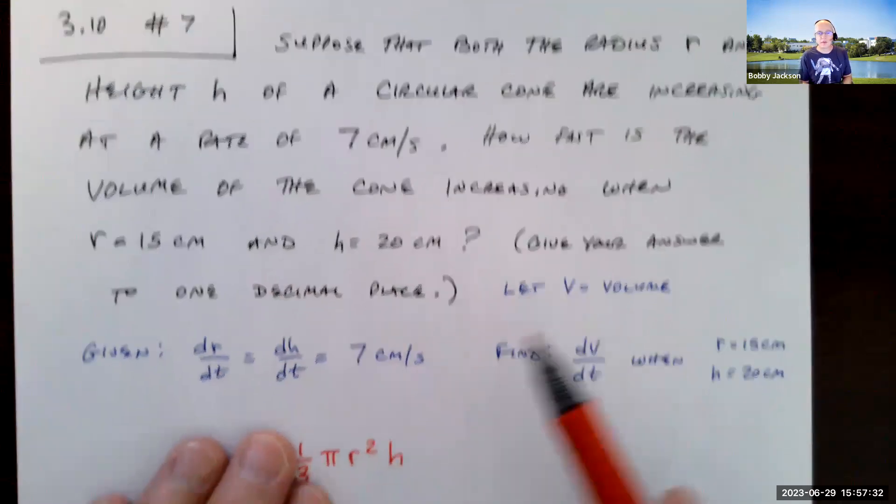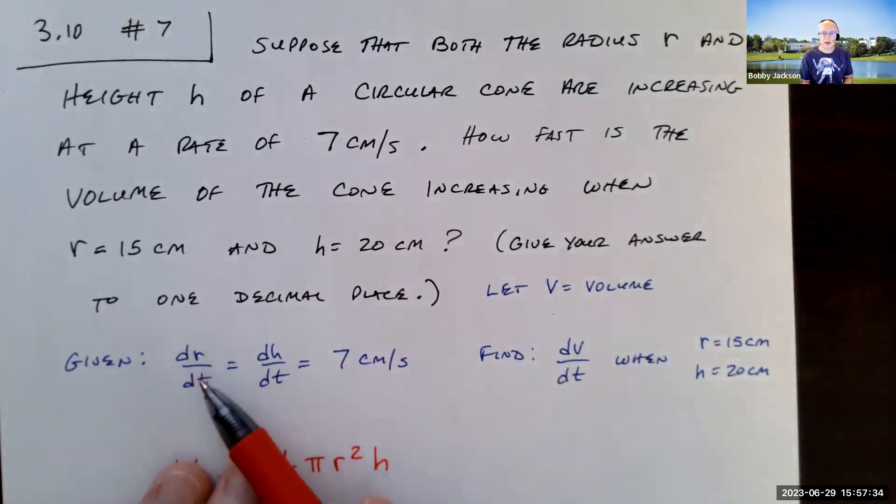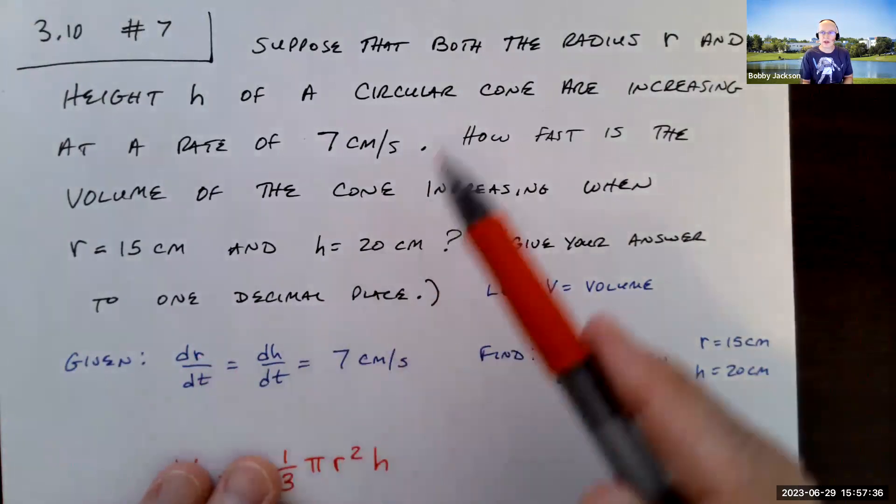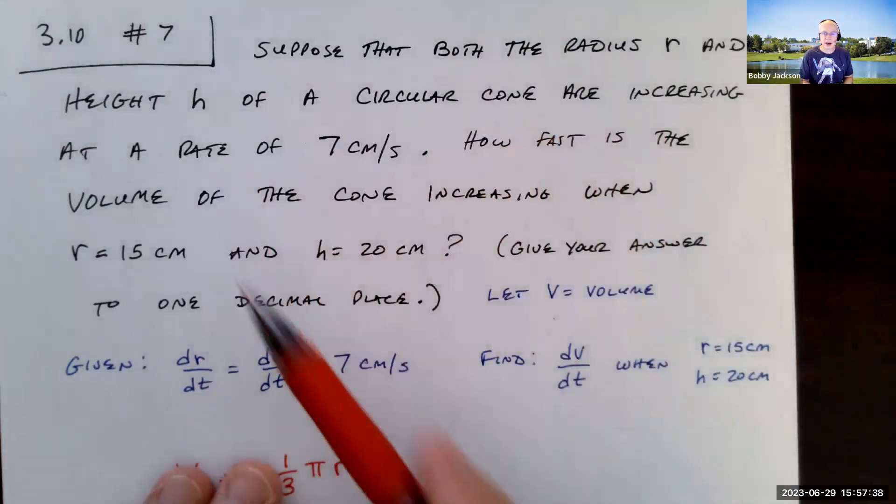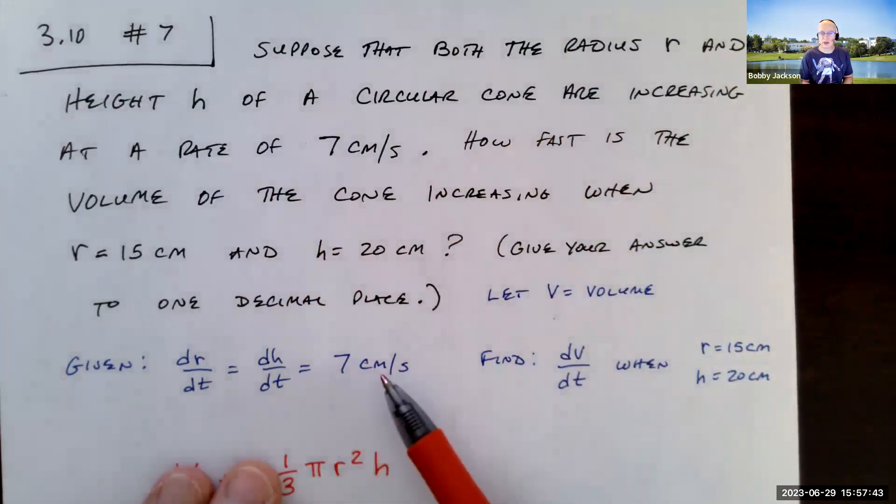So I'm going to let V be the volume. Notice we're given dr/dt and dh/dt. Those are the rates of change of the radius and the height of the cone with respect to time. Those are both equal to 7 centimeters per second.